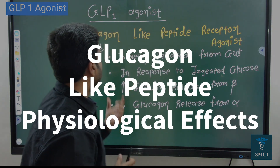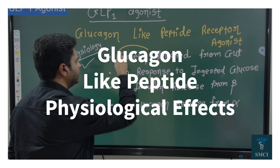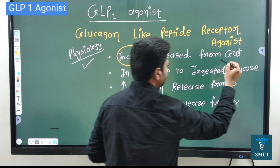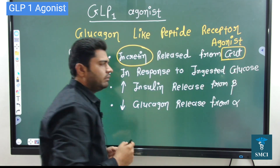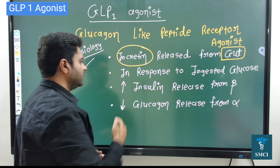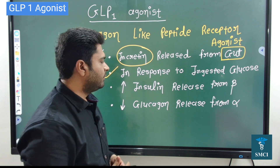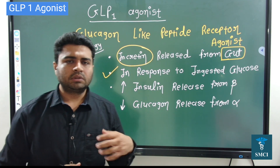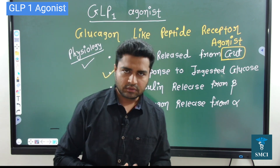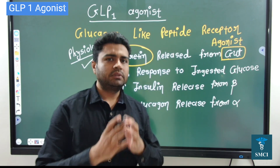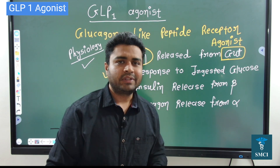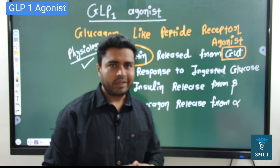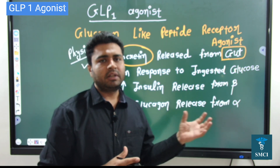GLP-1 is a glucagon-like peptide — it is one type of incretin. It is a peptide which is normally also released from our gut. When we have high glucose in our body, especially in the intestine, GLP-1 analogs are released. They mix into the blood, reach the pancreas, bind with the incretin receptors on beta cells, ultimately adenylyl cyclase is activated, and exocytosis of insulin occurs — insulin is released.